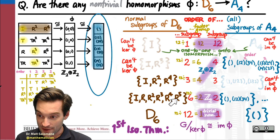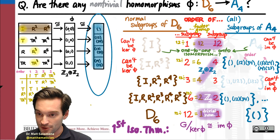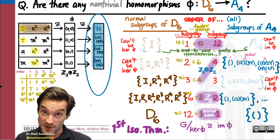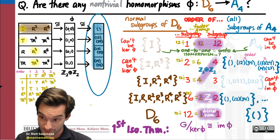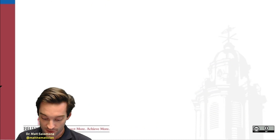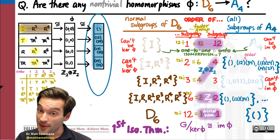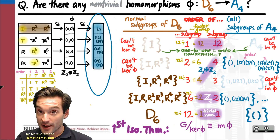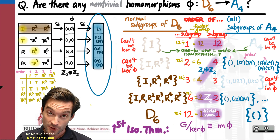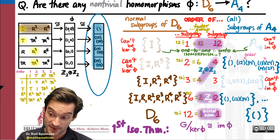So we have a non-trivial homomorphism using this kernel, and a non-trivial homomorphism using the other kernel, plus two other order-2 image subgroups that could be chosen. In total, the answer to whether there are non-trivial homomorphisms from D6 to A4 is yes — there are exactly four: three using an order-2 image and one using the order-4 subgroup of A4 as the image. In the next video we'll look at a couple more examples of using this strategy with the First Isomorphism Theorem to count homomorphisms between groups.